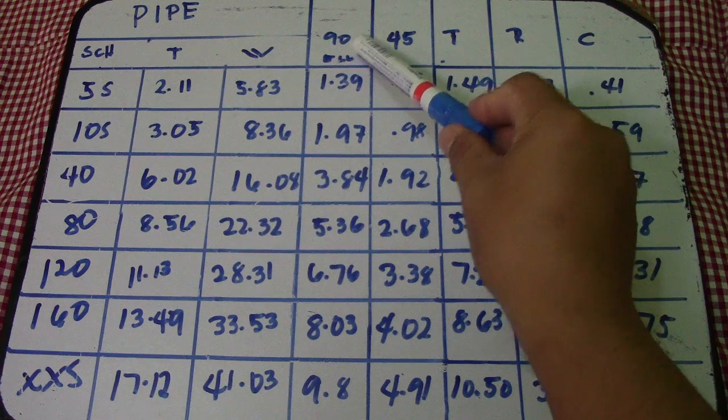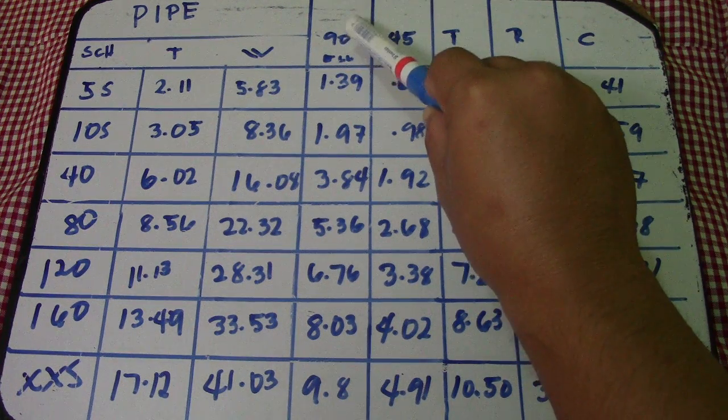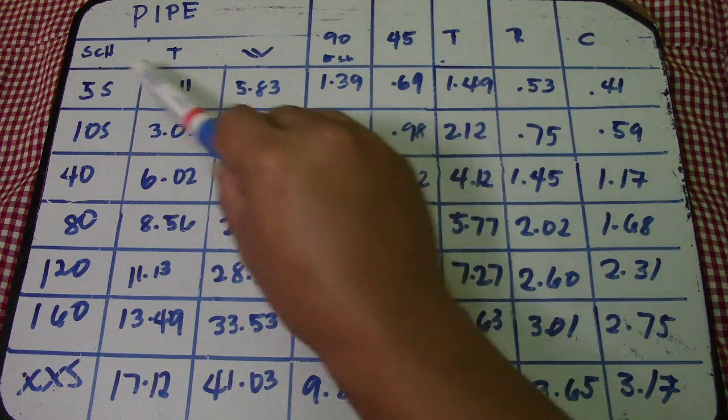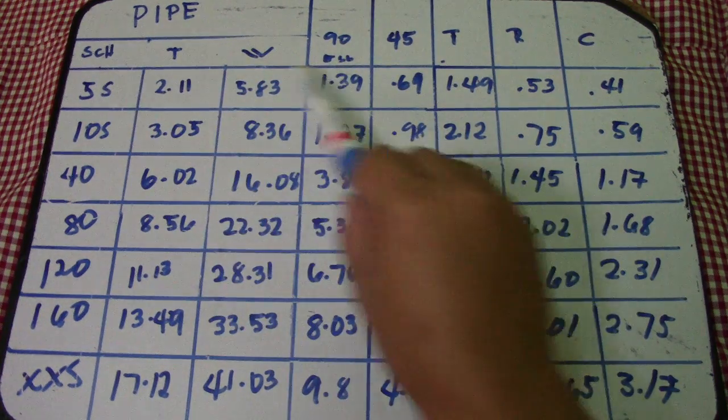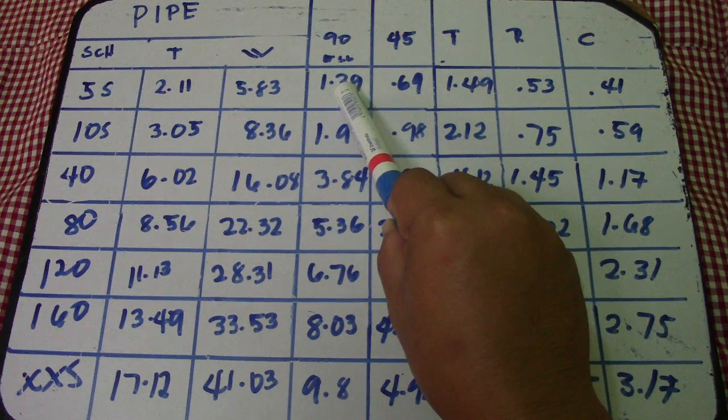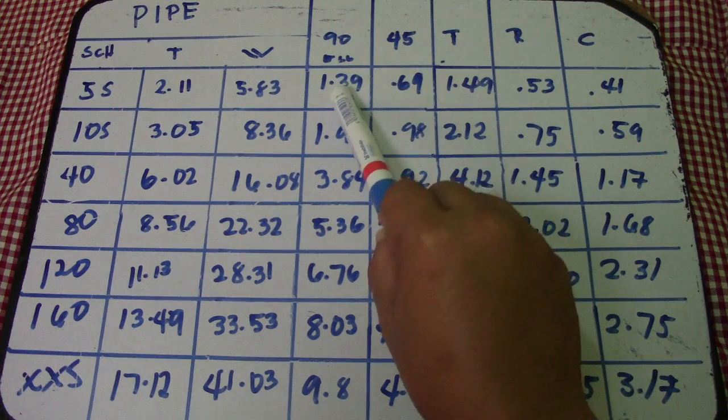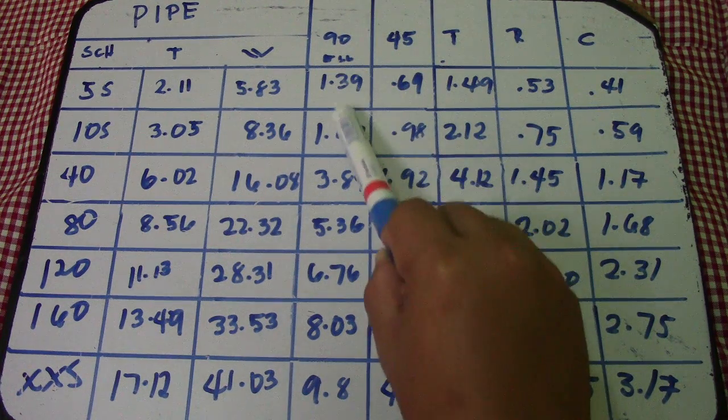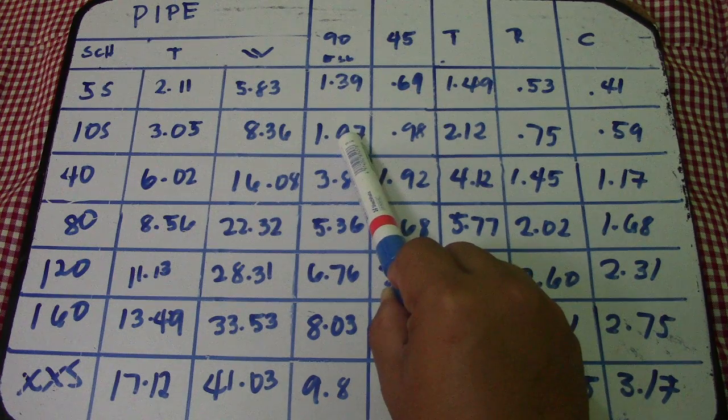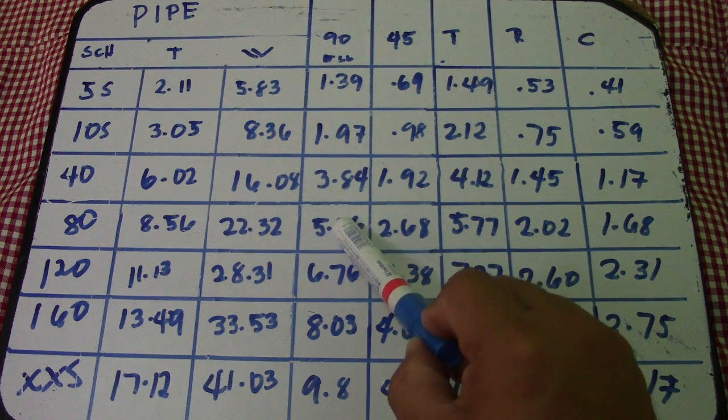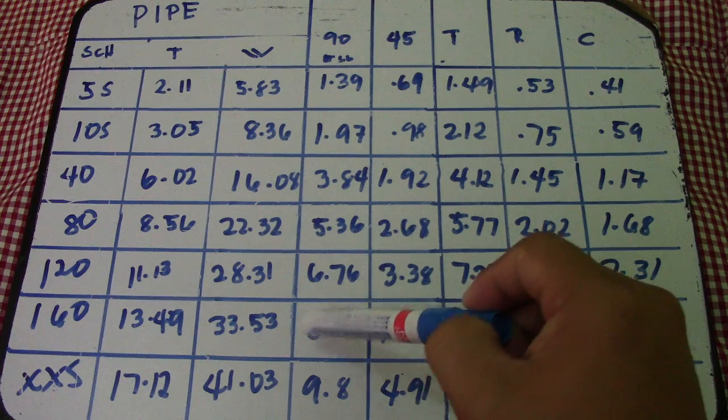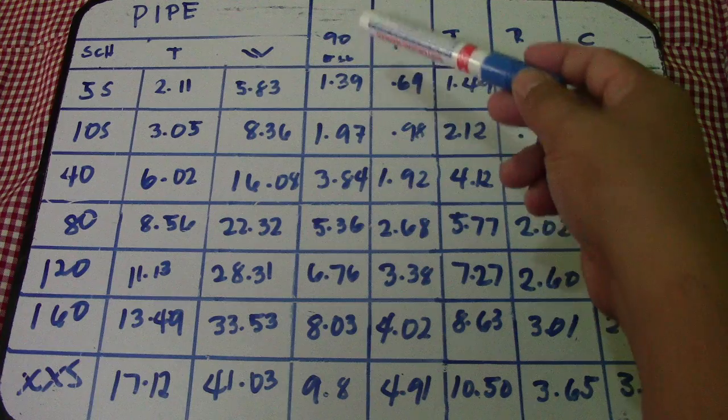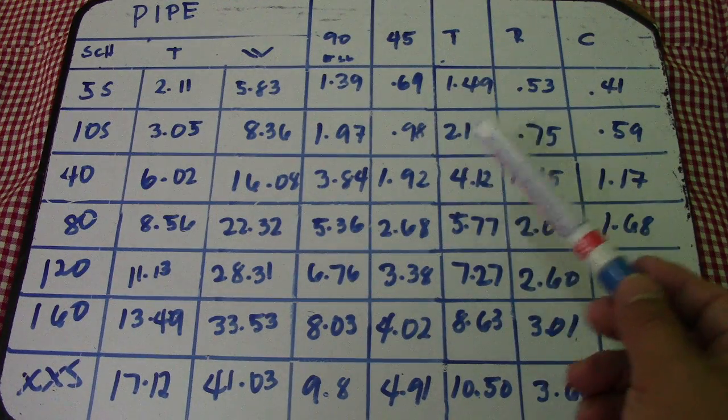Next column is 90 degree elbow. Schedule for that is 5S. This is 1.39, 1.97, 3.84, 5.36, 6.76, 8.03, and 9.08. This fittings column is for weight in kilograms.